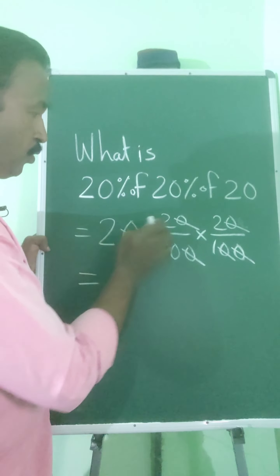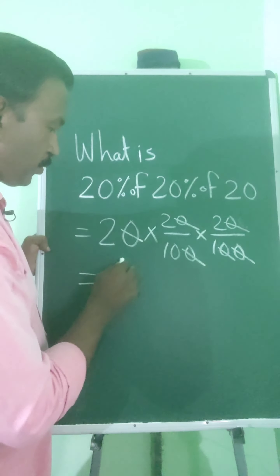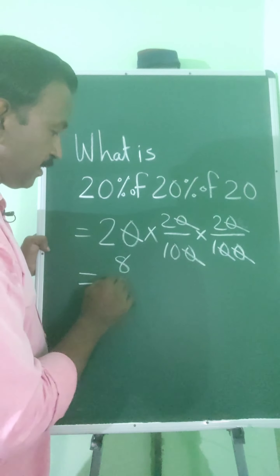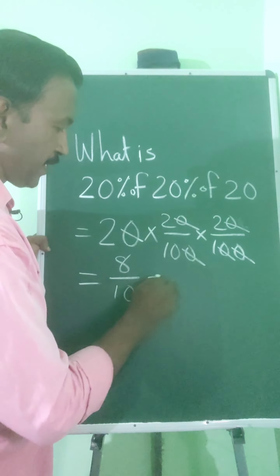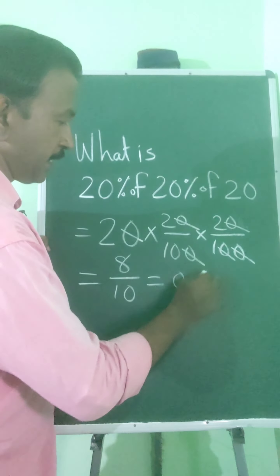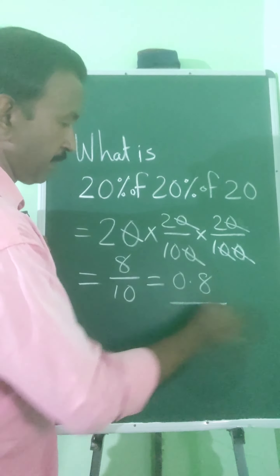2 into 2 is 4, and 4 into 2 is 8. So we have 8 divided by 10, which is equal to 0.8.